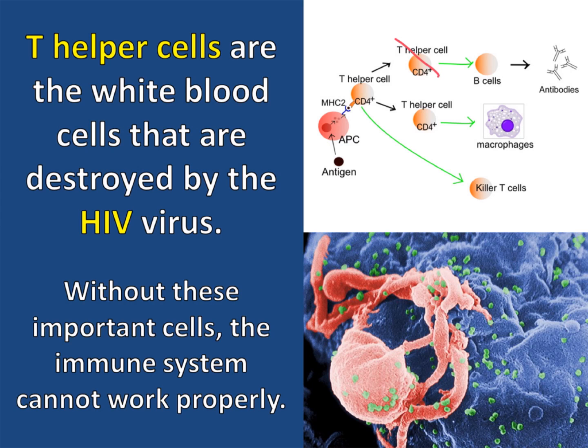T helper cells are the white blood cells that are destroyed by the HIV virus. Without these important cells, the immune system cannot work properly, and this causes the person to have an acquired immune deficiency syndrome, or AIDS. Once a person's immune system isn't working properly, they run a very high risk of getting other infections.